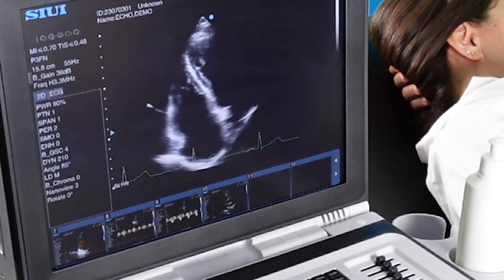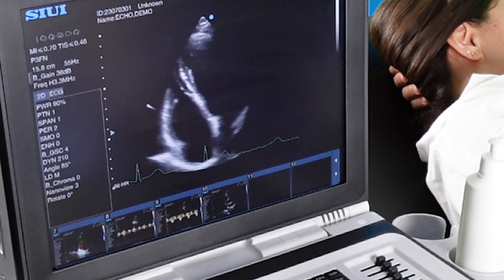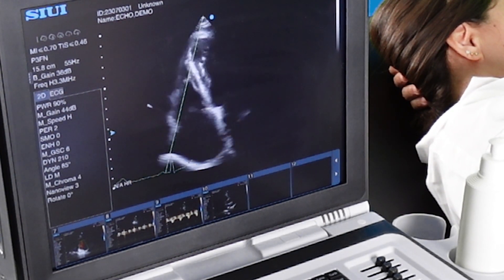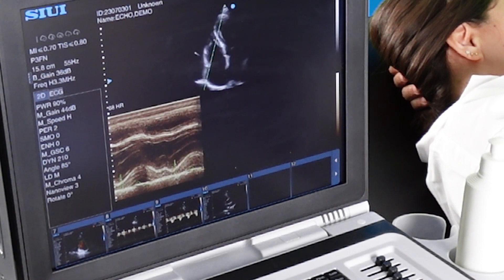Moving slightly laterally around the chest, we can get a right ventricular focused view. And from here we can get TAP-C using M-Mode.